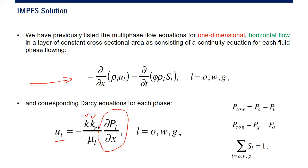We know that we have capillary pressure because we have a wetting phase and a non-wetting phase. For the oil-water system, capillary pressure is oil pressure minus water pressure, because capillary pressure is the pressure of the non-wetting phase subtracted by the pressure of the wetting phase. In this case, the wetting phase is water, so capillary pressure for the oil-water system is oil pressure minus water pressure.